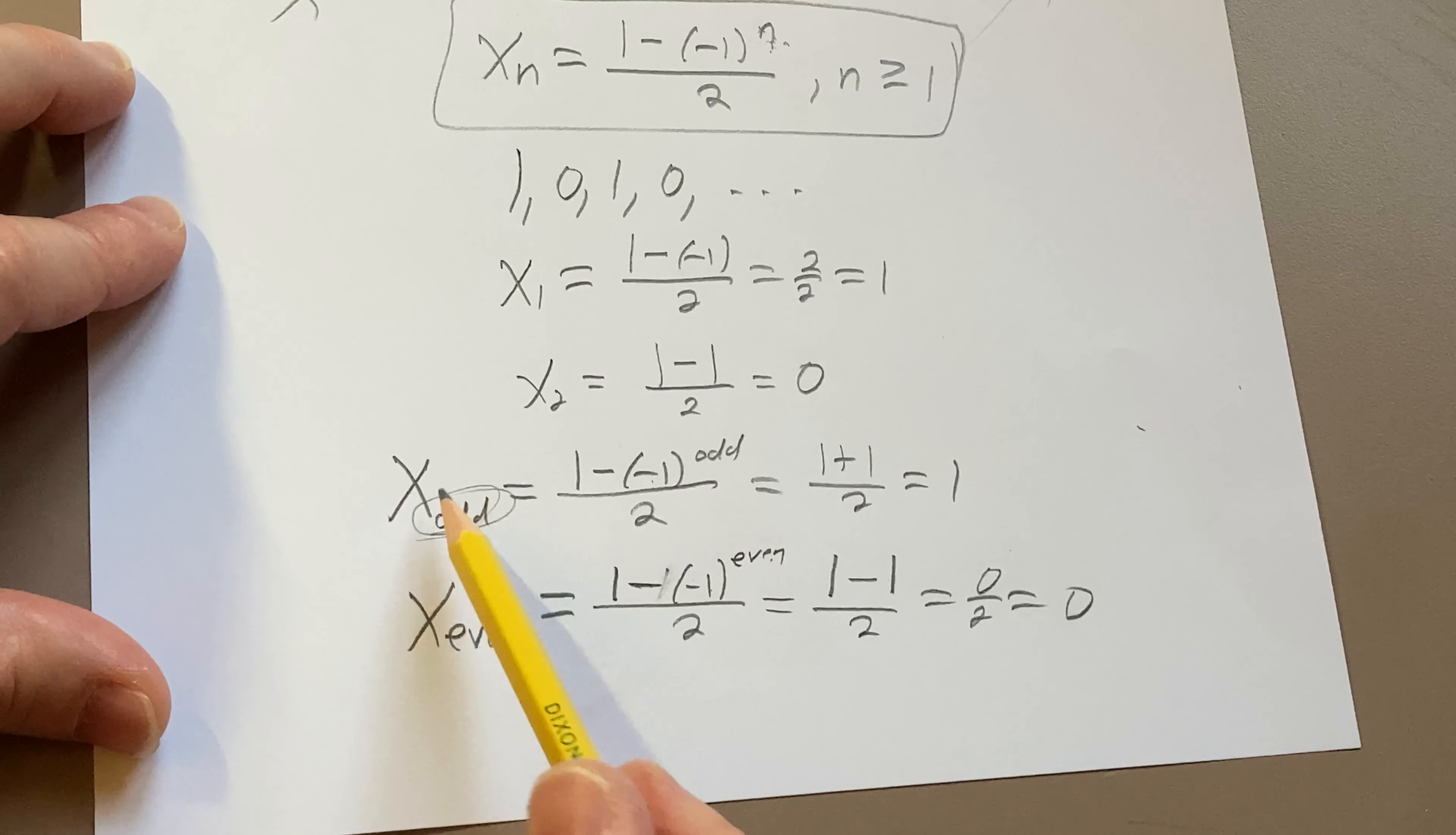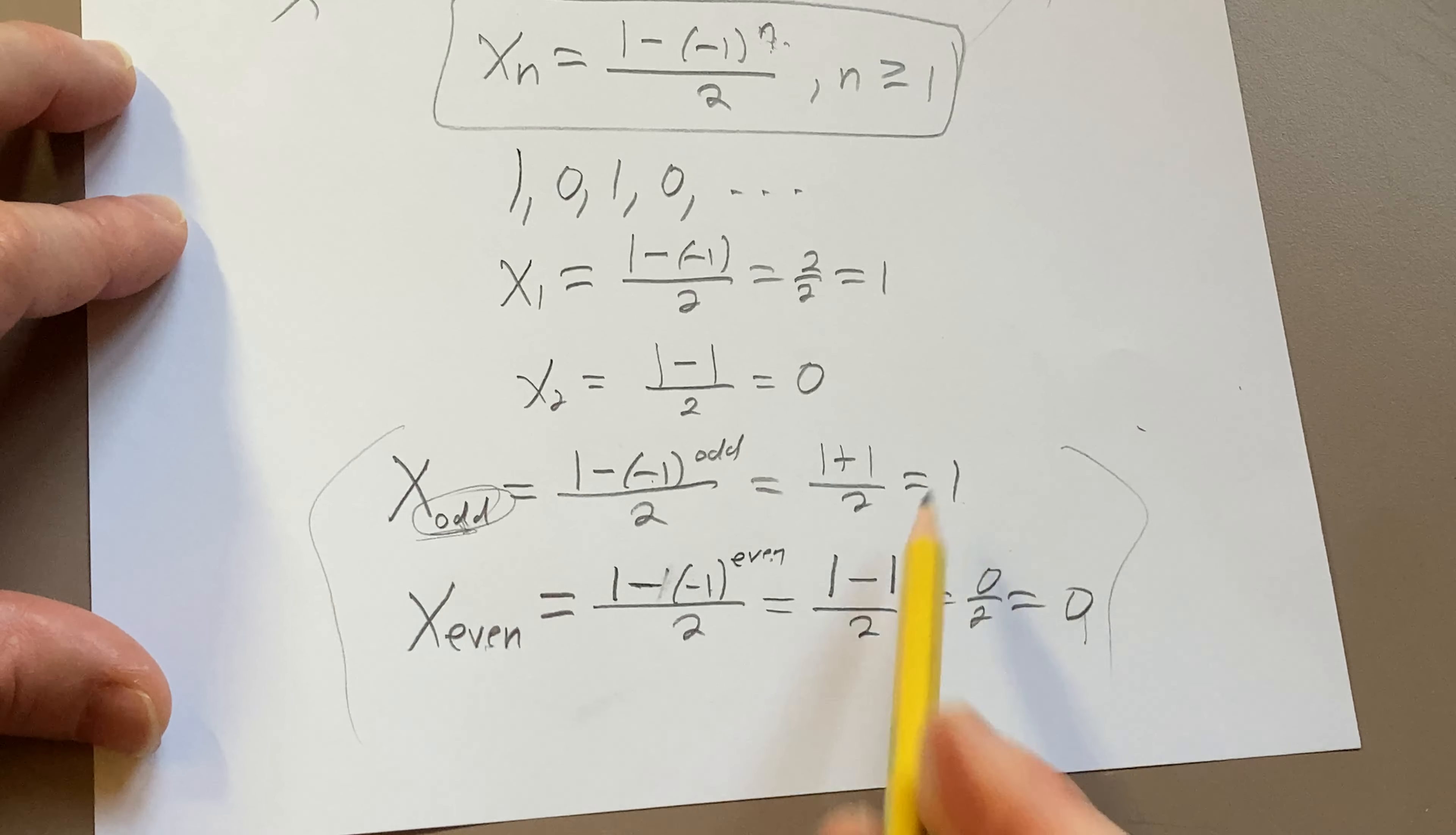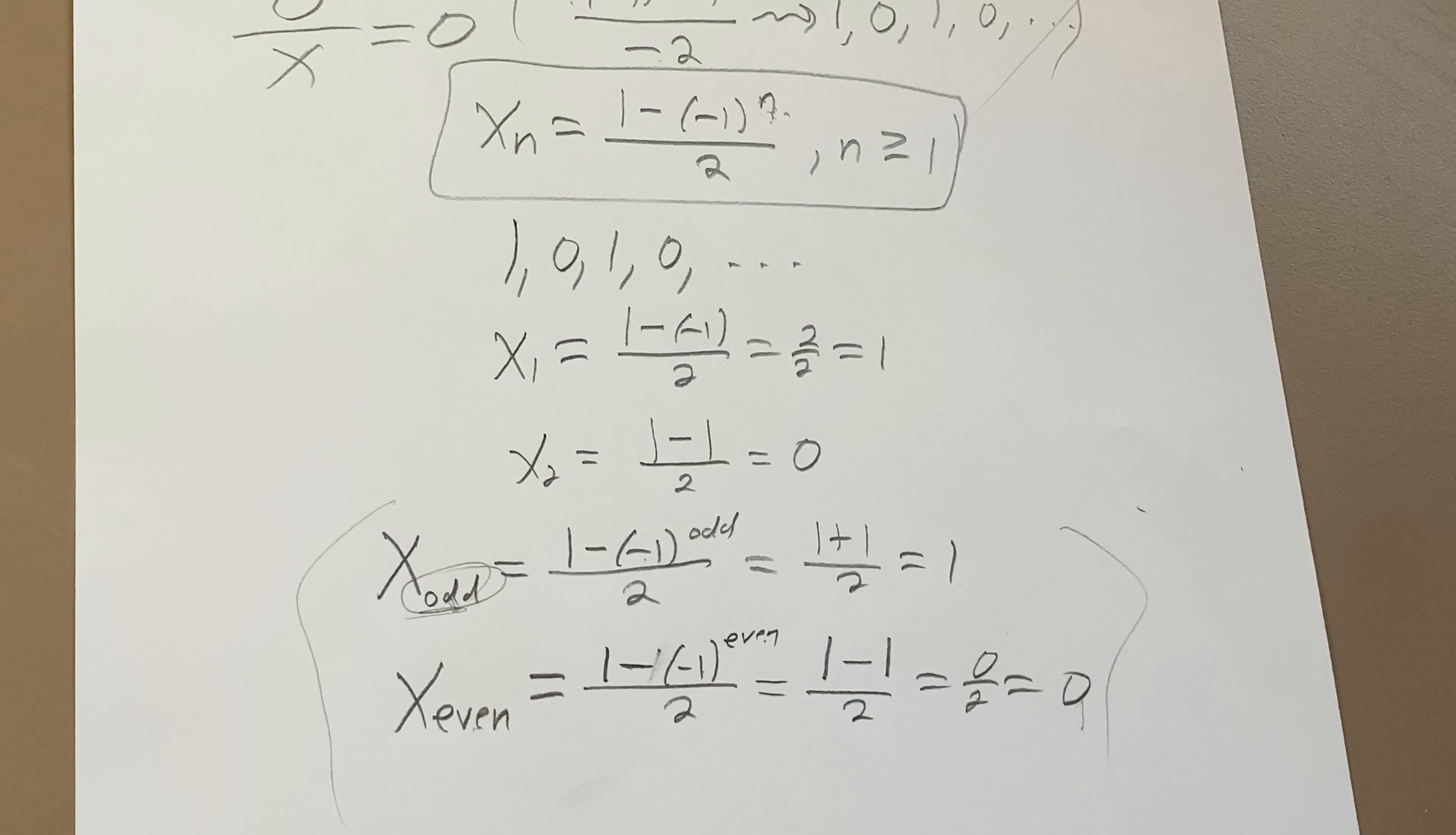x with a subscript, x with an odd number, you're going to get 1. x_even number, you're going to get 0. So, looks good. I hope this video has been helpful to someone. Good luck.